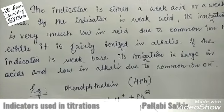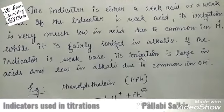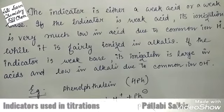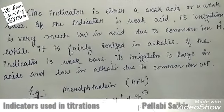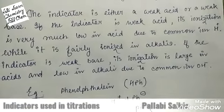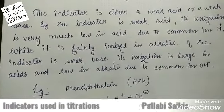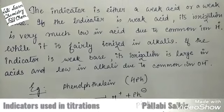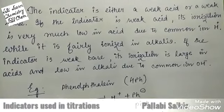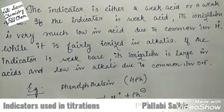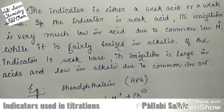If the indicator is a weak acid, then during acid-base titration due to the common ion H⁺ in acidic medium, the ionization of the indicator is very slow. When base is added to the acidic solution, after some time all the acids are neutralized by the base. Further addition of base makes the solution basic, and hence the ionization of the indicator will increase, resulting in a different color from the unionized indicator.